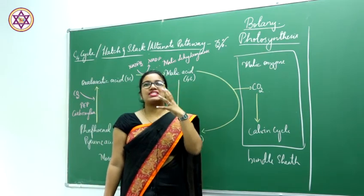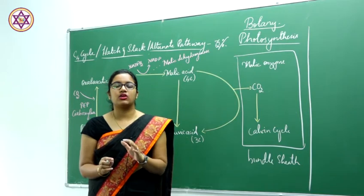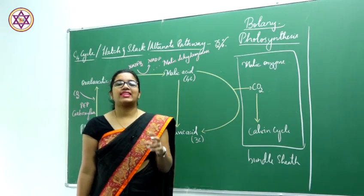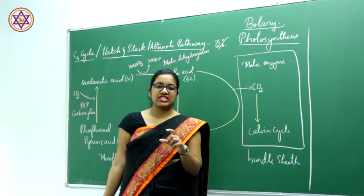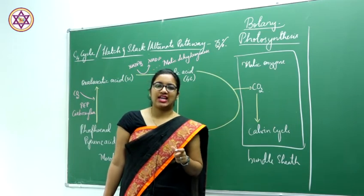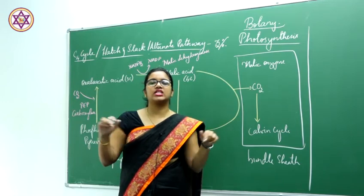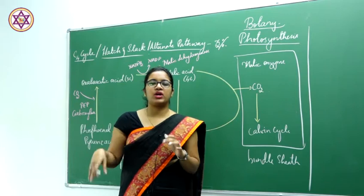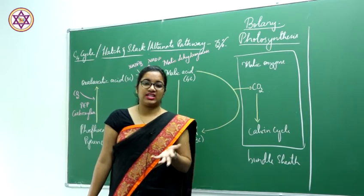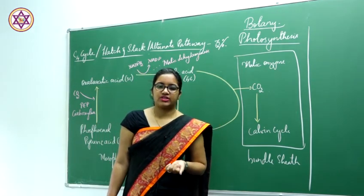Regarding chloroplast ultrastructure: all chloroplasts consist of a double membrane layer and have the special coin-like stacks called grana, which are made up of thylakoids. All thylakoids put together form the grana. They have frets channels so the grana are interconnected. The stroma is the jelly matrix containing DNA, RNA, ribosomes, proteins, and enzymes for biochemical reactions.